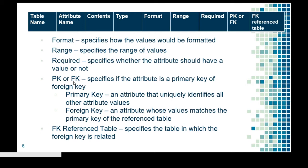PK or FK specifies if the attribute is a primary key or a foreign key. A primary key is an attribute that uniquely identifies all other attribute values — it is unique. A foreign key, on the other hand, is an attribute whose values match the primary key of the reference table. We will have an example later. The foreign key reference table specifies the table to which the foreign key is related.